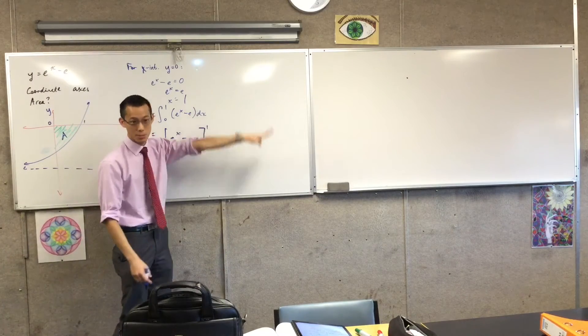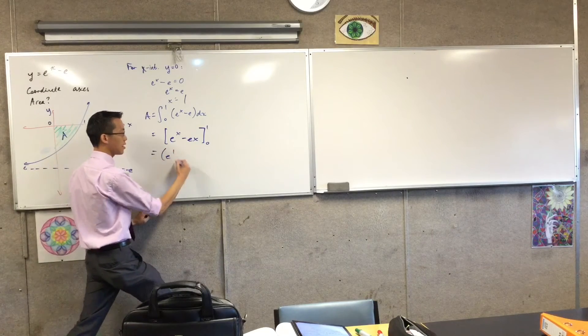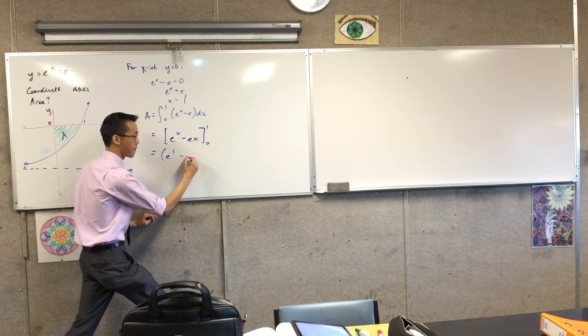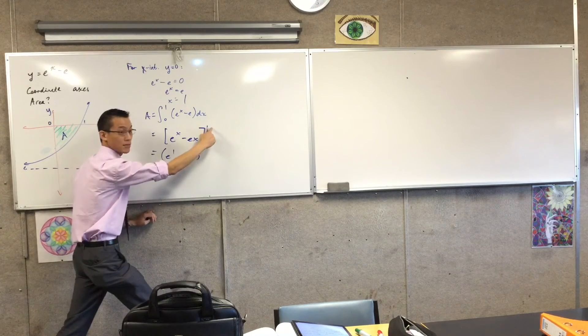I could have put plus c in here if I wanted to, but it's going to get added and then subtracted. So that's the advantage of working with definite integrals. Let's just quickly evaluate. So we've got e to the 1 take away e times 1.